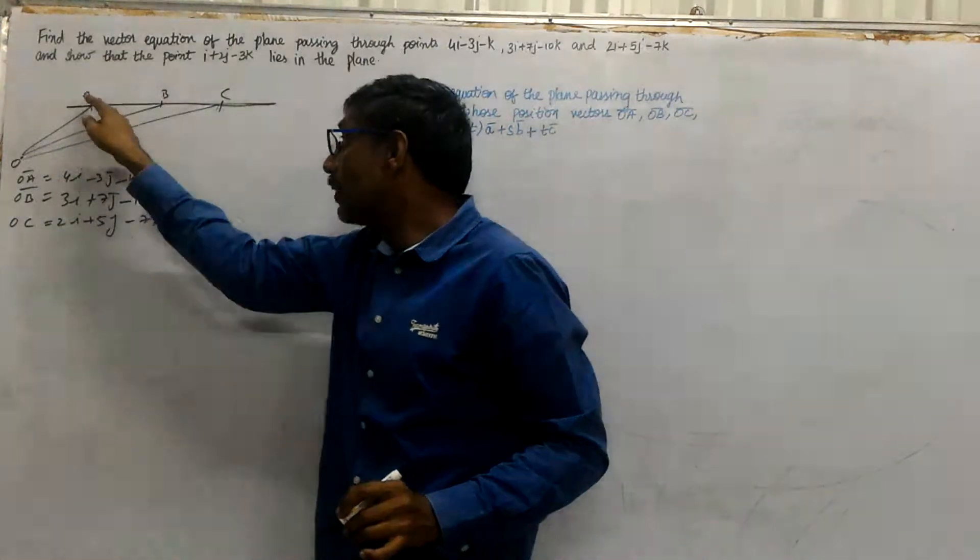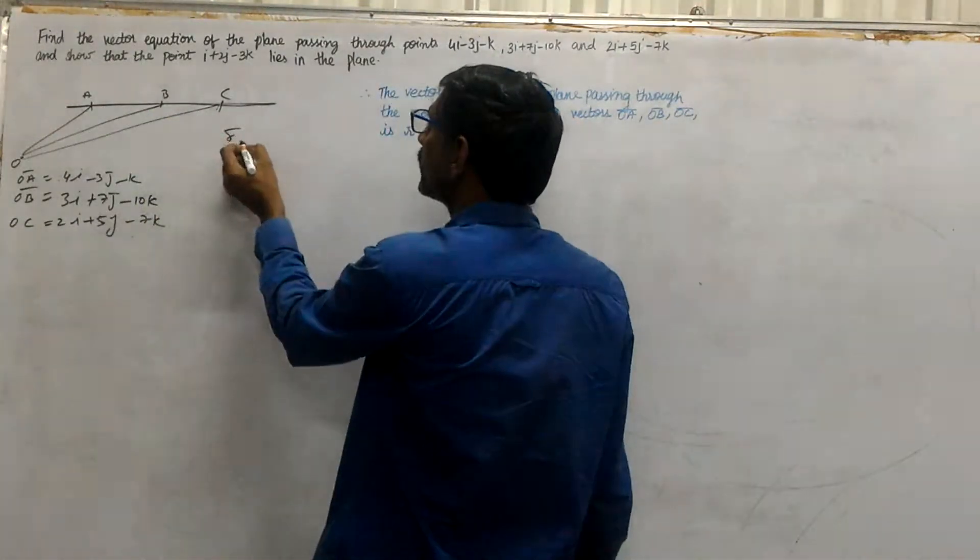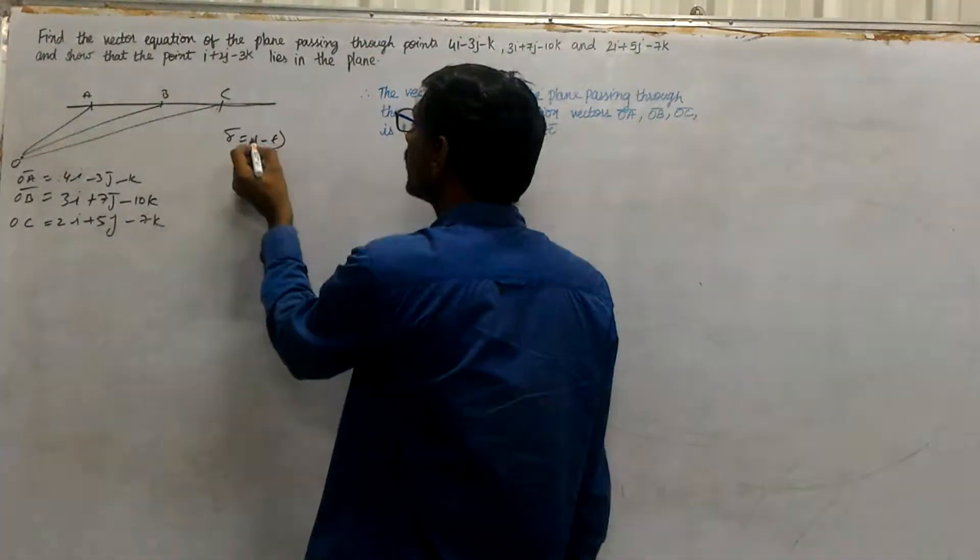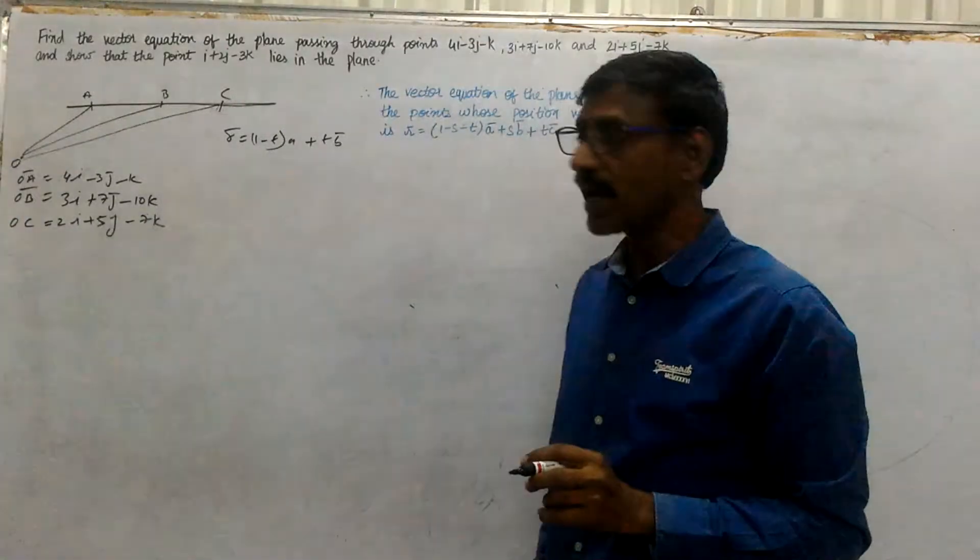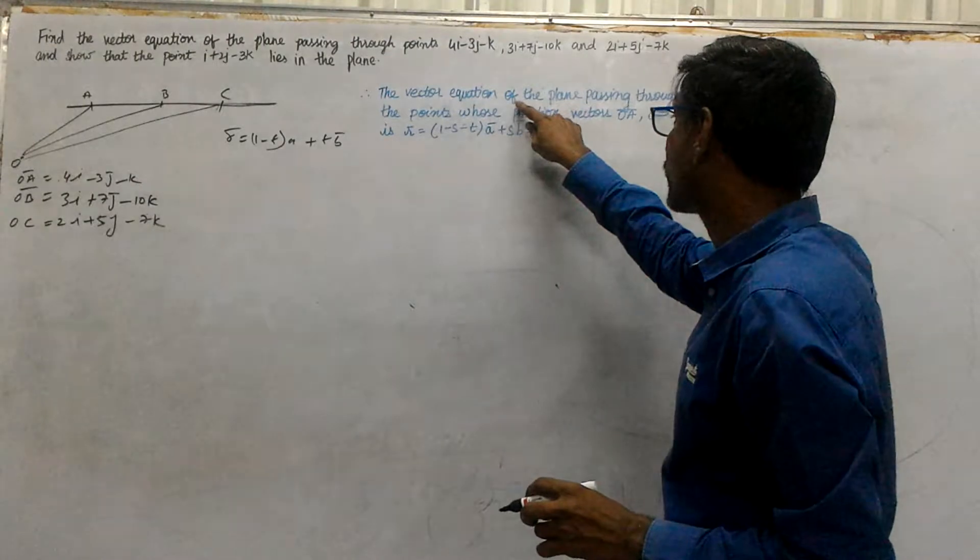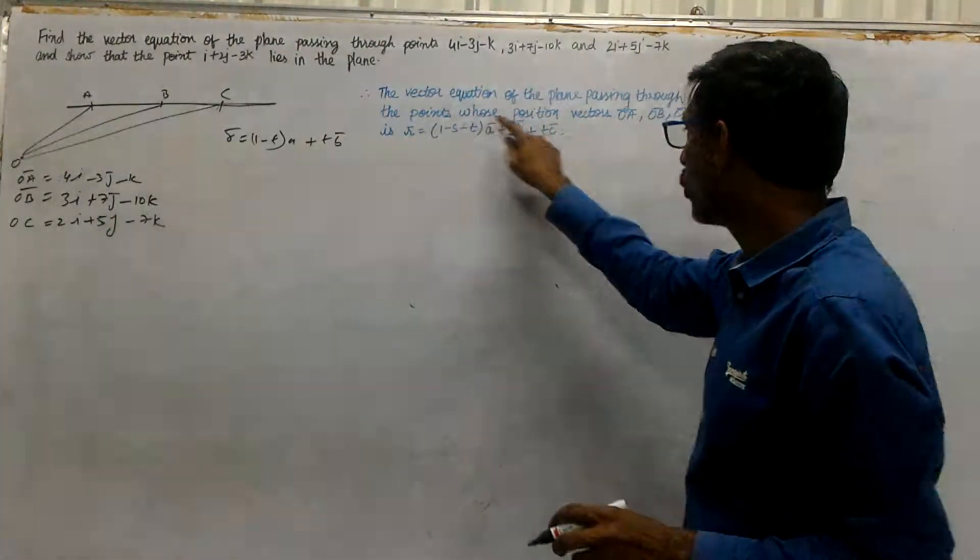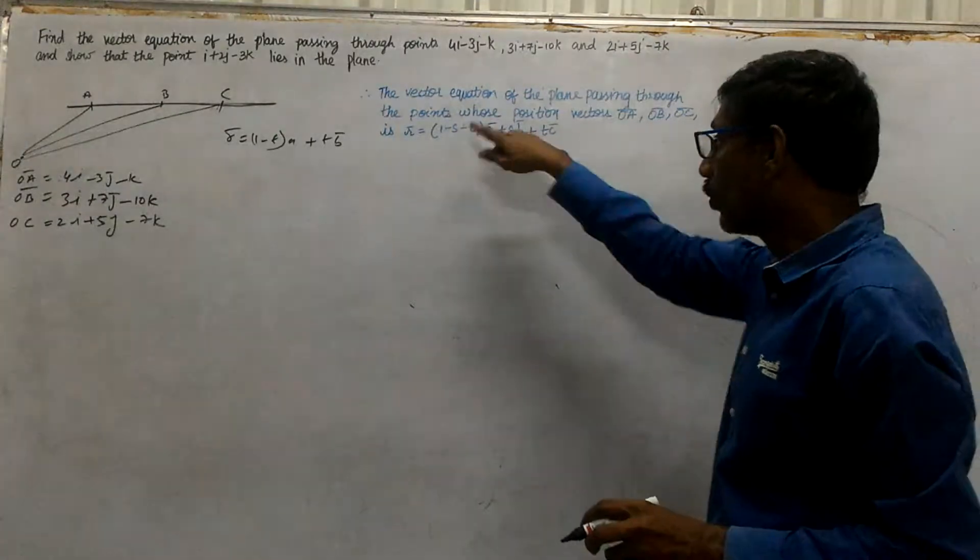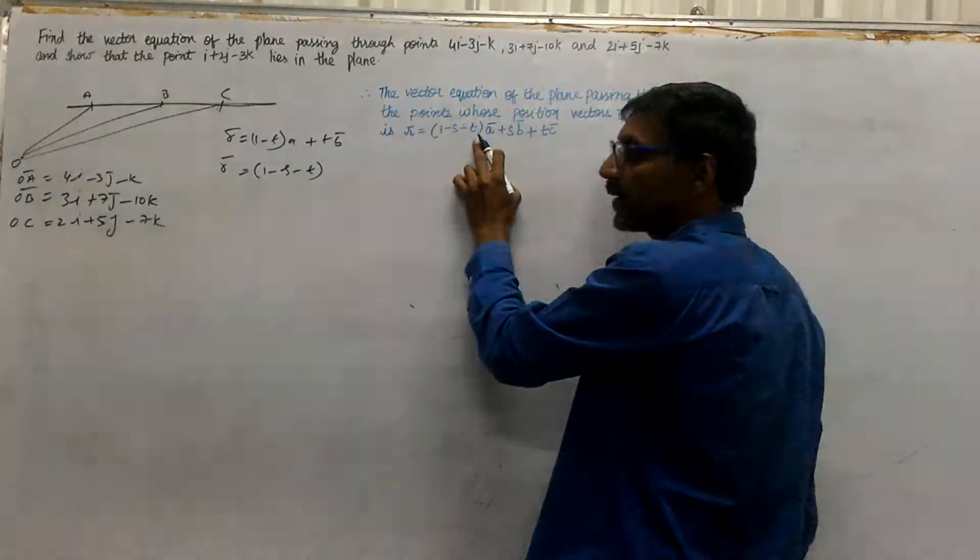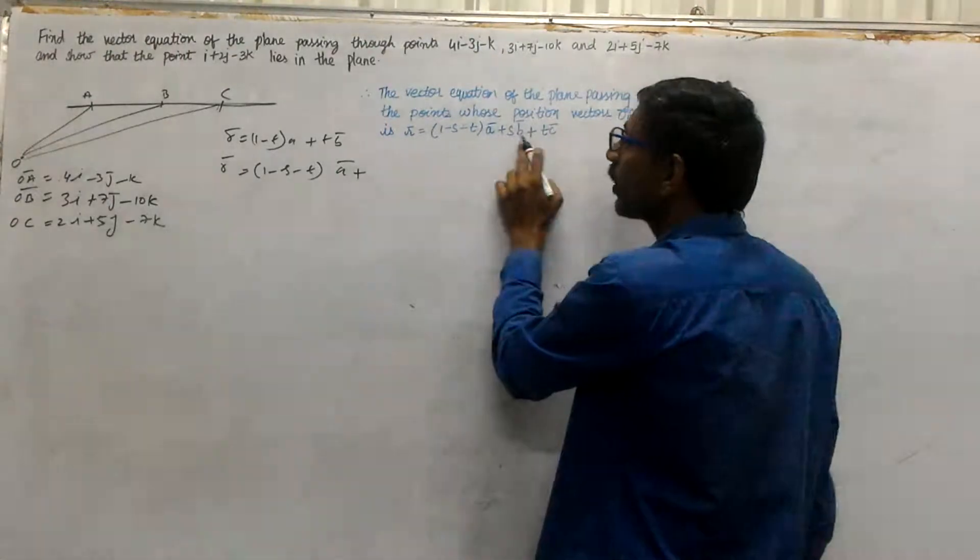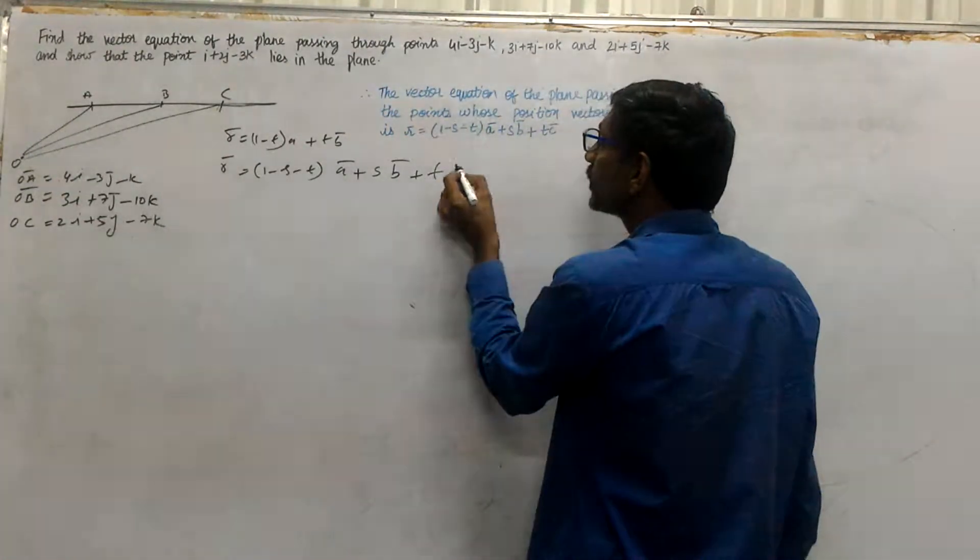For a plane through three points, the vector equation passes through the points whose position vectors are OA, OB, OC. The equation is R bar equals (1-s-t) times A bar plus s times B bar plus t times C bar.